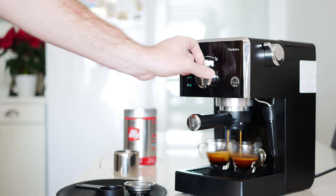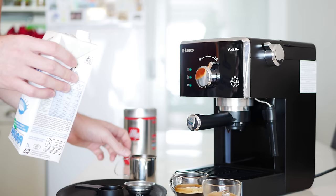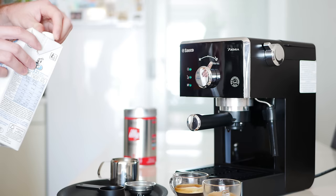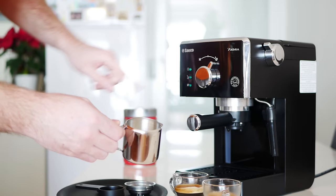Now turn the knob to the right to warm up the machine for the milk steaming. When the green light appears, the machine is ready and you can steam the milk.